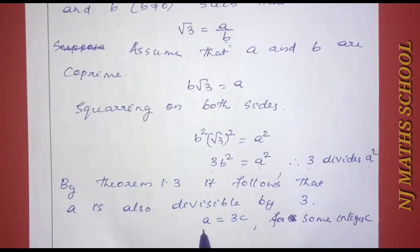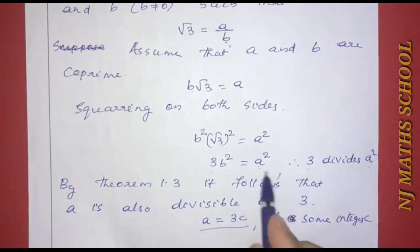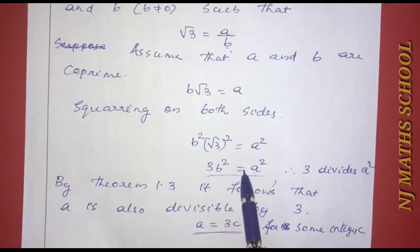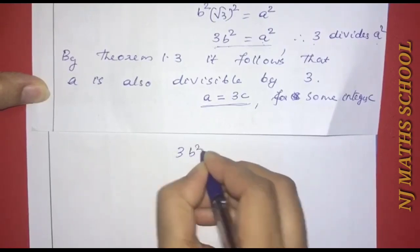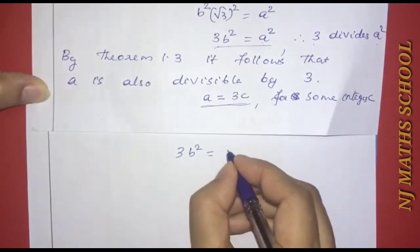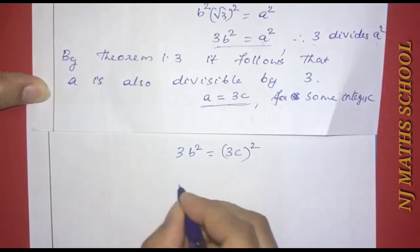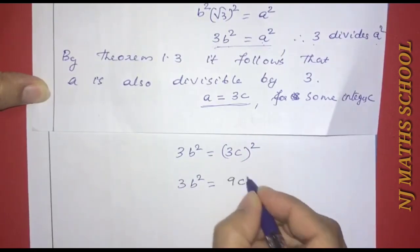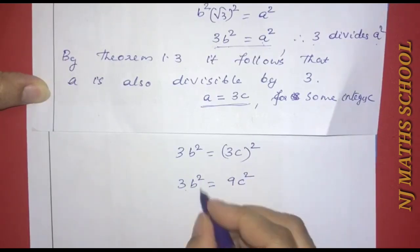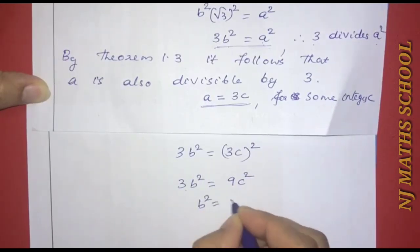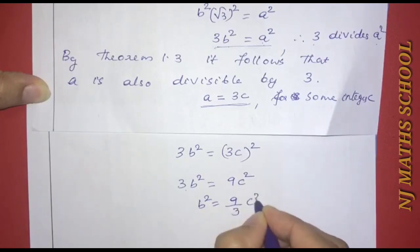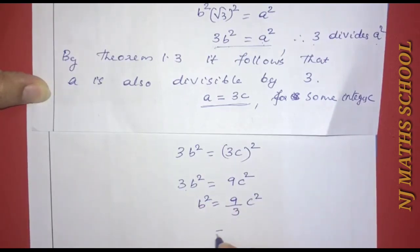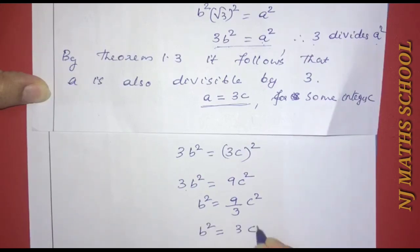Now we substitute a equal to 3c into the equation 3b squared equals a squared. We get 3b squared equals 3c whole squared, that is 3b squared equals 9c squared. Dividing both sides by 3, b squared equals 3c squared.